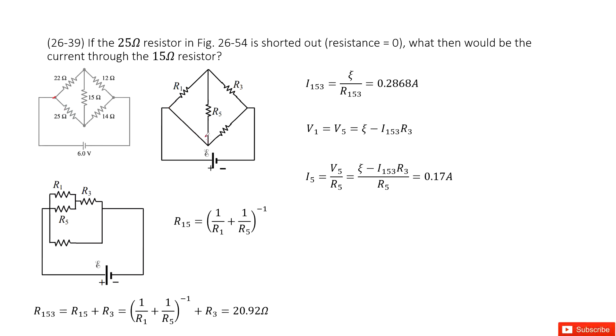So now I ask you what then would be the current that goes through the 15 ohms. So 15 ohms is in the middle. So I ask you to find the current that goes through I5.